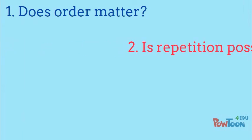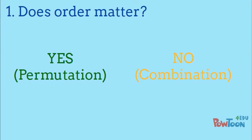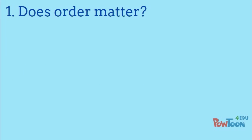Whether or not an arrangement of items is called a permutation or combination depends on whether or not the order matters. So the first question to ask is, does order matter?